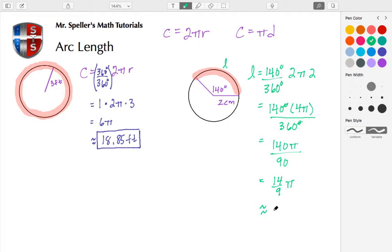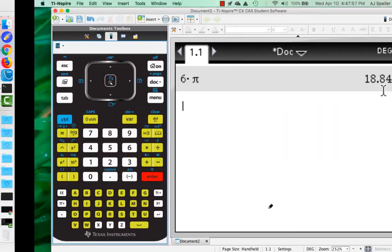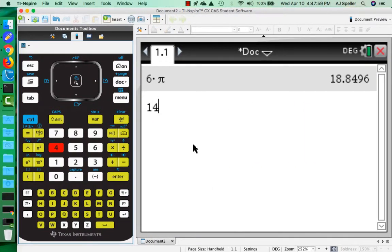And to get the approximation, I'm going to go ahead and go back to the TI Inspire and I'm going to divide out the 14 by 9 and then multiply by the approximation of π.